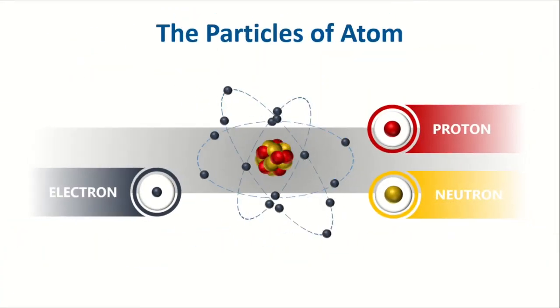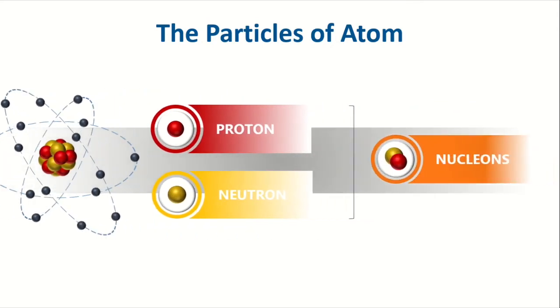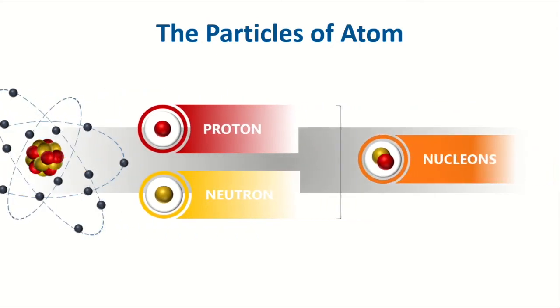Protons and neutrons are collectively called nucleons because they reside in the nucleus. Because both particles contribute one unit to the atomic mass, and remember that electrons mass is so little that it is almost negligible, the mass of an atom is virtually concentrated in the nucleus. The nucleus is also positively charged because of the presence of the positively charged proton.